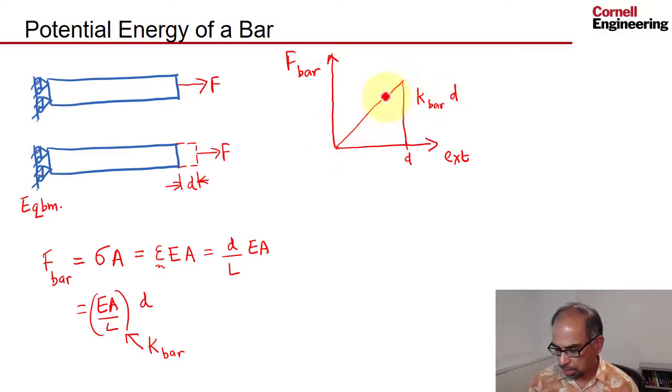As before, the area under this curve will give us the work that we can get out of the bar when we release it. So it's a measure of potential energy in the bar.